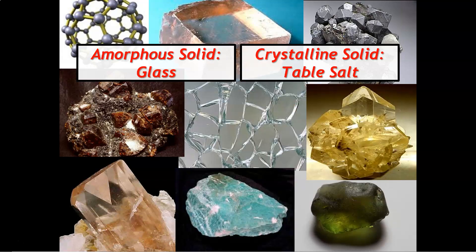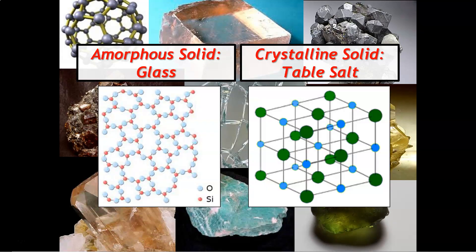Here are two pictures you can compare side by side to understand why one is called amorphous and the other crystalline. On the left hand side you can see there's really no orderly arrangement of the silicon dioxide molecules, and on the right hand side you can see the table salt is very orderly — a nice ordered pattern. That's why we say the one on the left is amorphous and the one on the right is crystalline.